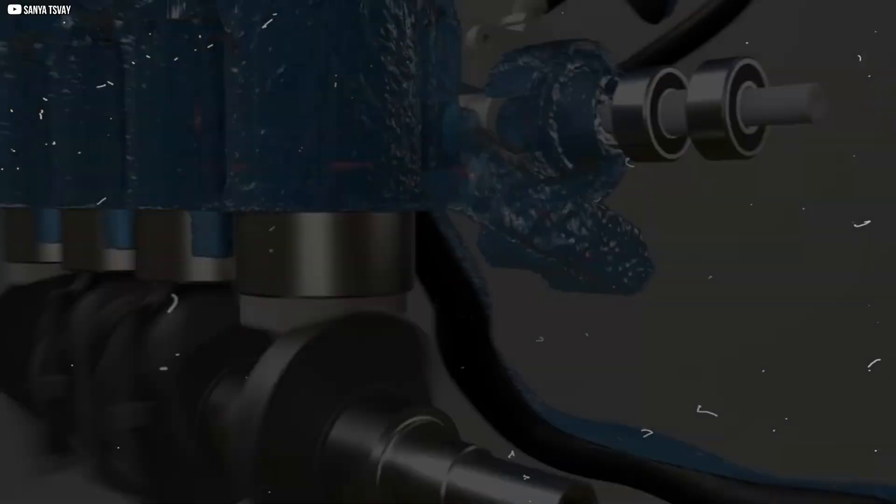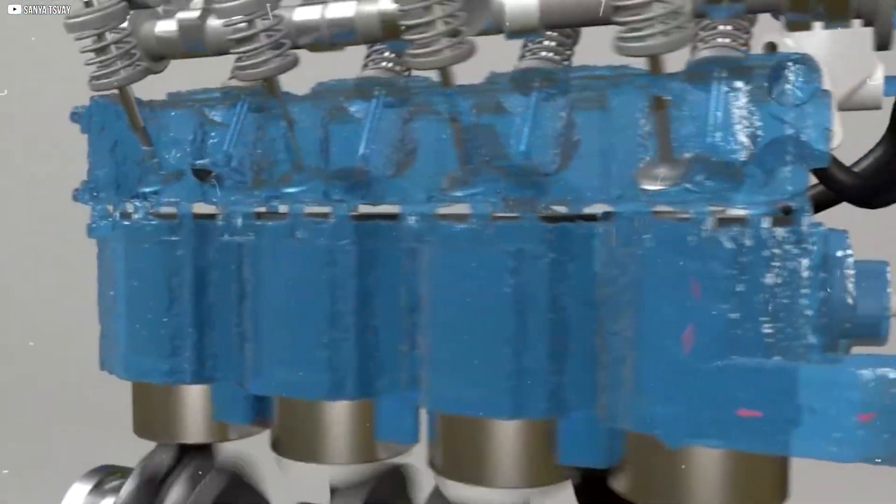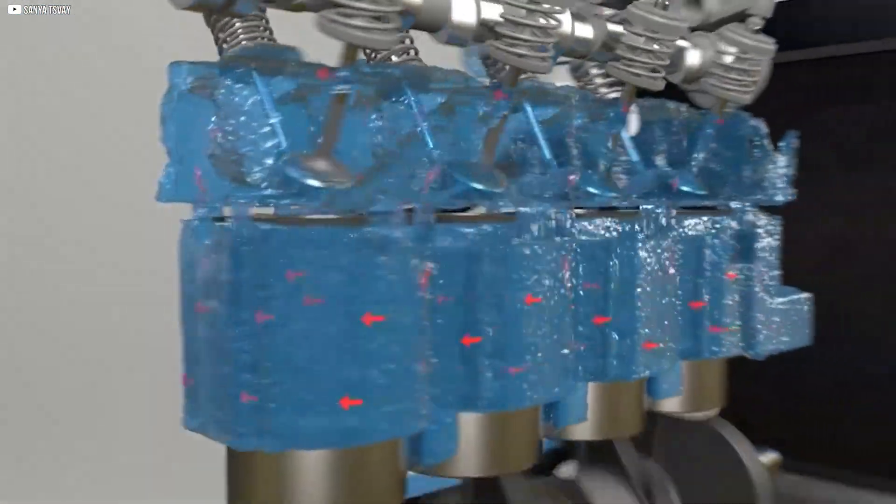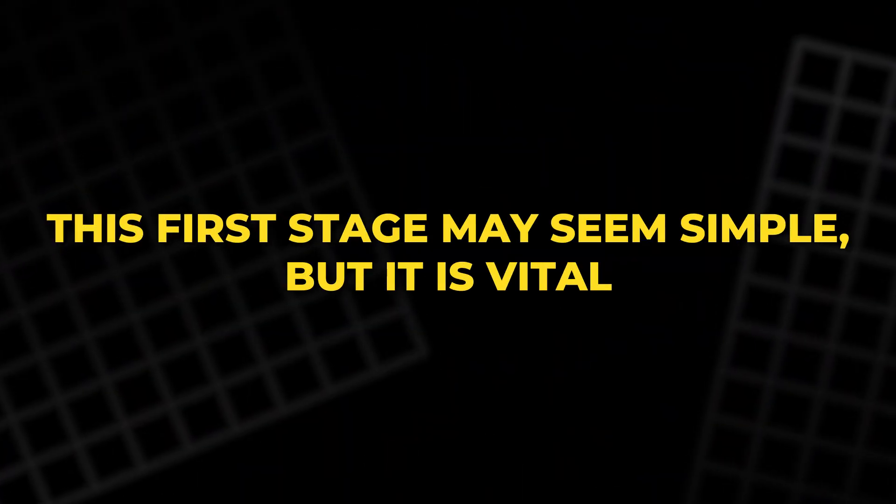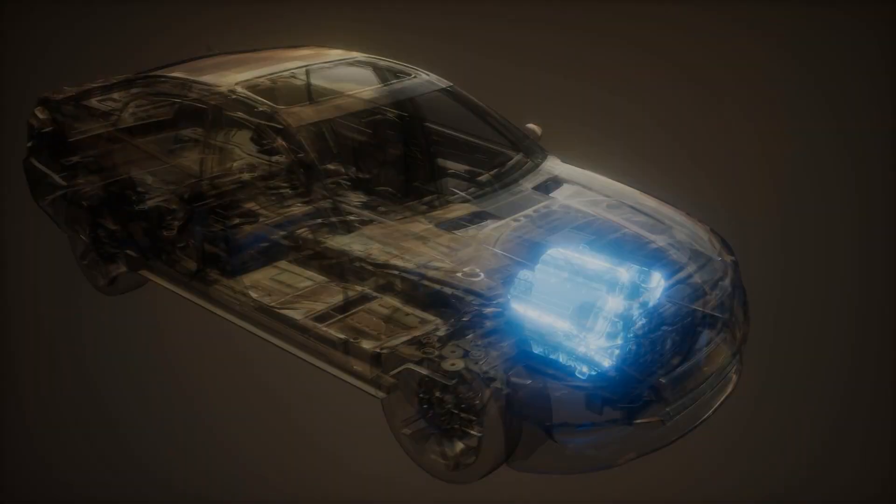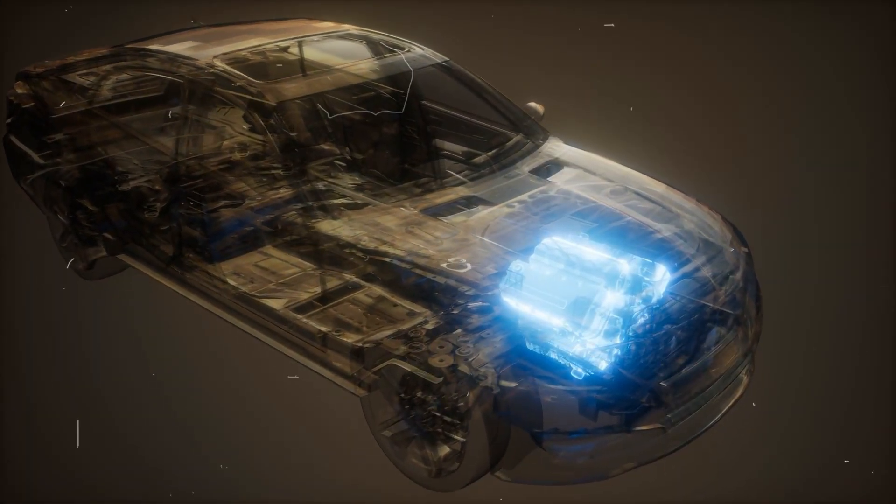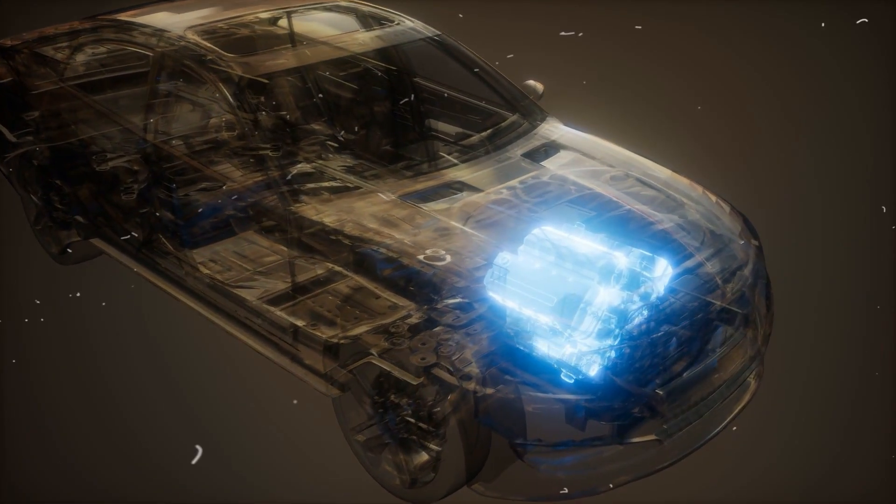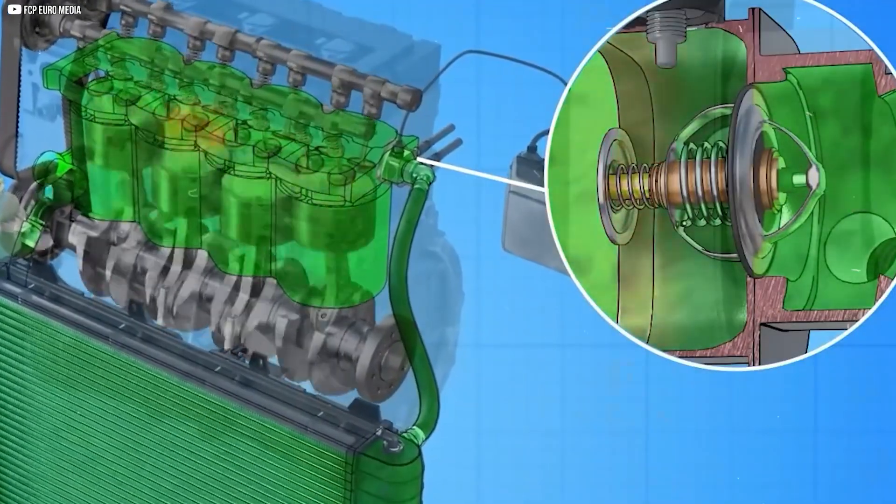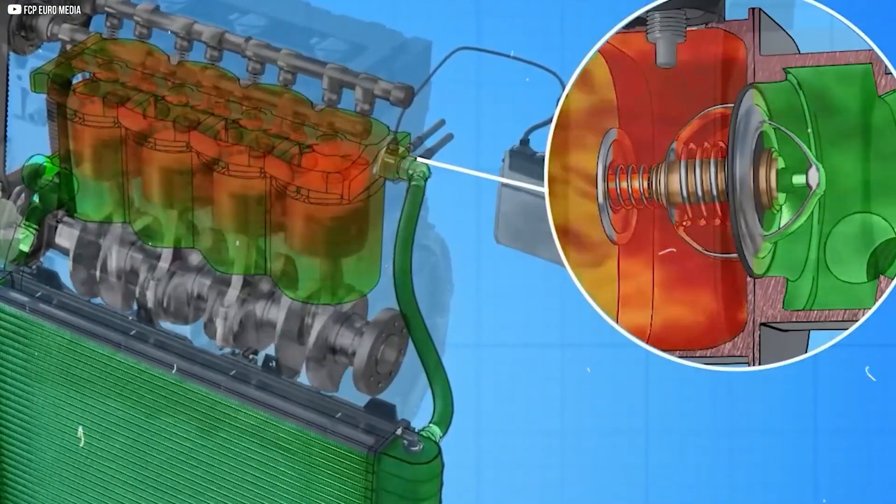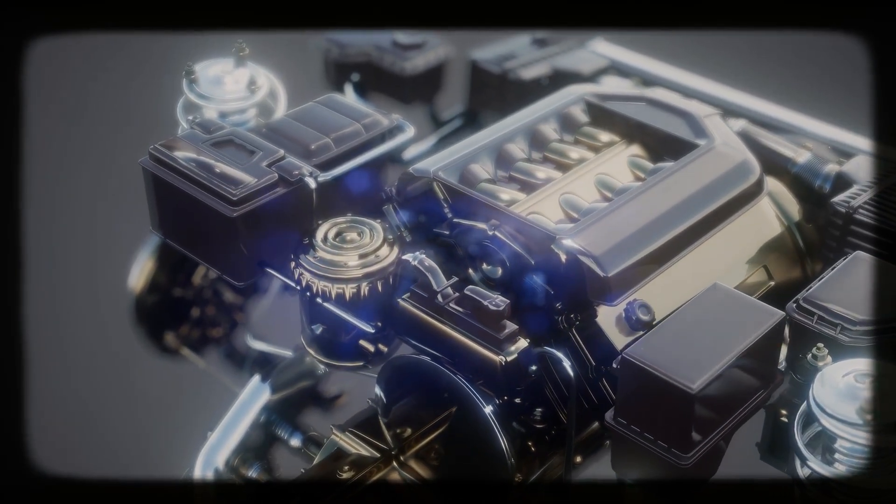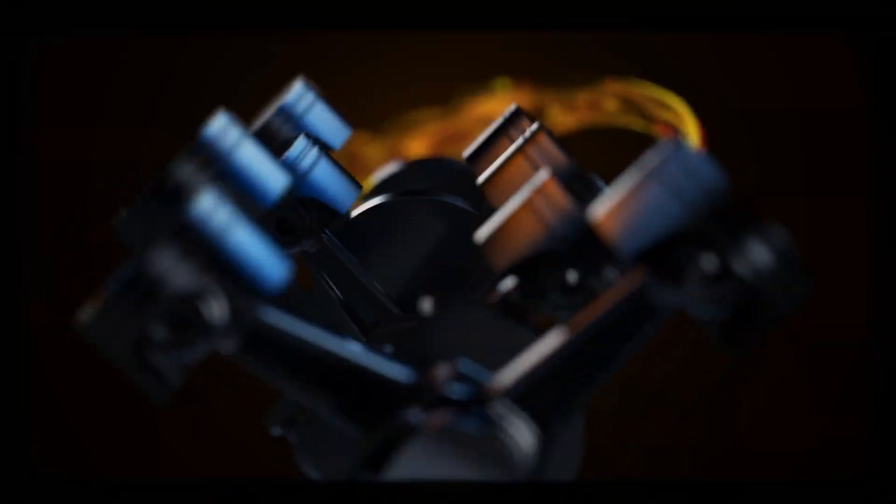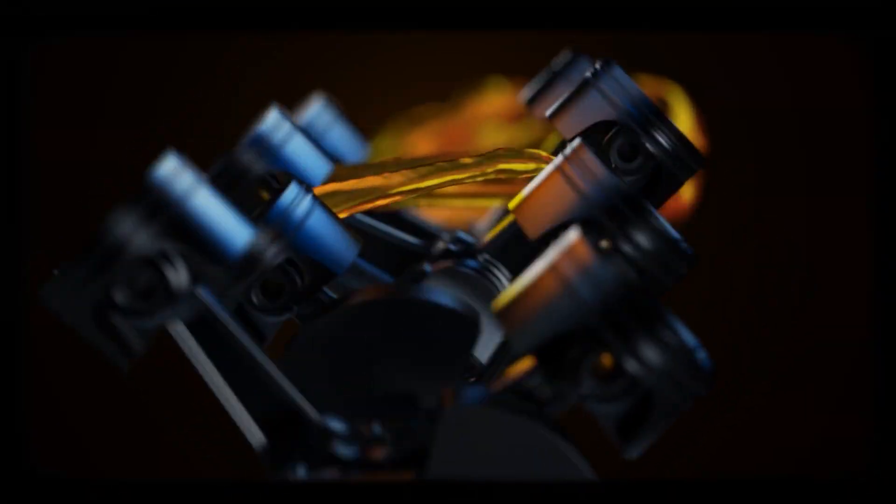The jacket is like a hidden chamber wrapping tightly around the walls where fuel burns with explosive heat. Every second, combustion sends out waves of energy that could melt metal if left unchecked. The coolant absorbs this energy, carrying it away before damage can begin.